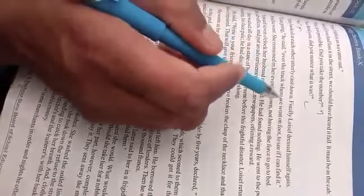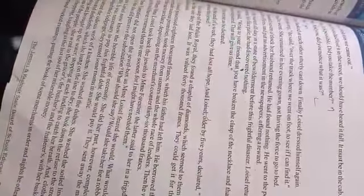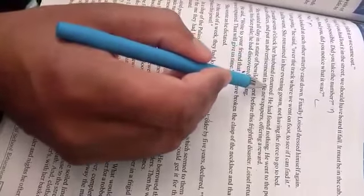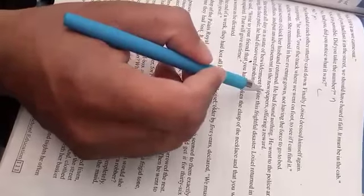Finally, Loisel dressed himself again. 'I'm going,' he said, 'over the track where we went on foot to see if I can find it.' He went to search the path they had walked, thinking maybe it had fallen there. She remained in her evening gown, not having the force to go to bed. She wore her night gown but couldn't sleep because she was so worried. Around seven o'clock, her husband returned. He had found nothing. He went to the police, to the cab office, put an advertisement in the newspaper offering a reward. He did everything possible to find it. Dear students, today's time is up. We'll continue reading tomorrow, inshallah.